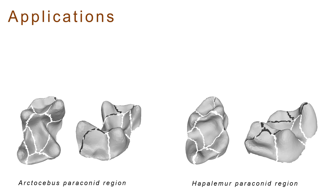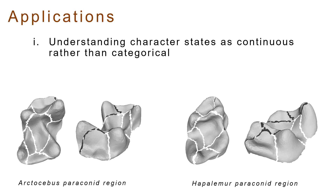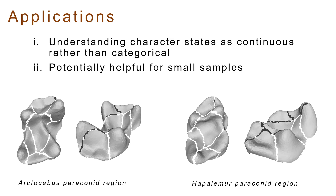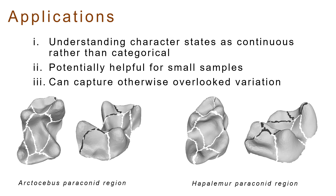As well, our approach has applications outside of just euprimates and their paraconids. Understanding character states as continuous rather than categorical variables can help in multiple ways: it's better for smaller samples since you don't lose variation shrouded by categories, and it can capture morphological variations that aren't true cusps or that would be challenging to categorize.